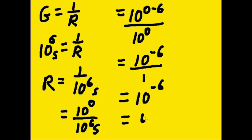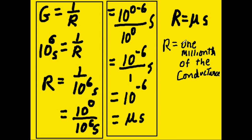So the resistance is equal to one millionth. It's equal to one millionth of the conductance, which is what we said over here in the beginning, that G equals one over R.